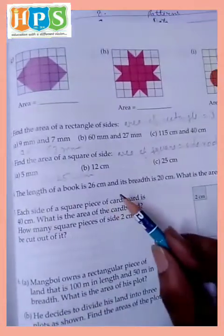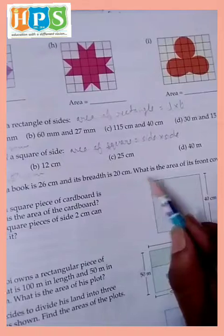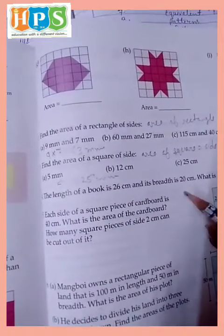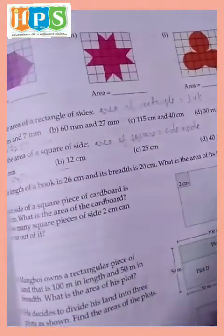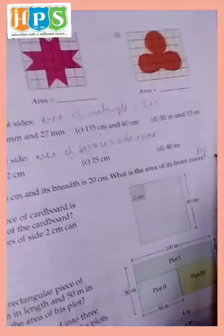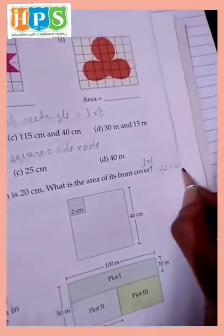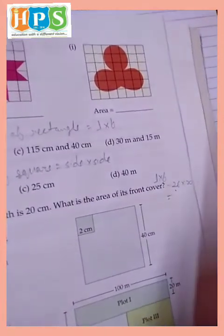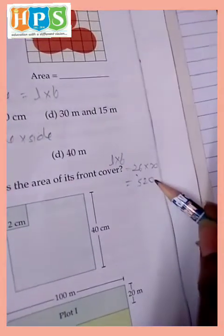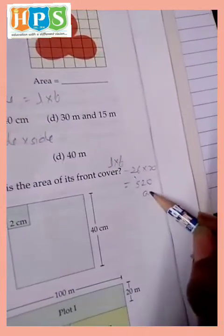The length of the book 26 centimeter and breadth 20 meter. What is the area of the front cover? Book is a rectangular shape, so area of rectangle, L into B. 26 multiply 20, L is 26 and breadth 20. 26 to the, 26 to the 52 and 0, centimeter square.